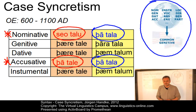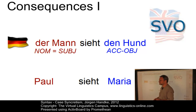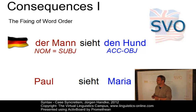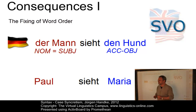What are the consequences of this case syncretism? One essential consequence can be referred to as the fixing of word order. The word order of present-day English is SVO, and it developed from a relatively free word order of former periods, for example Old English. The mechanisms underlying this drift from one word order pattern to another can nicely be illustrated with an example from German, which still uses case distinctions.